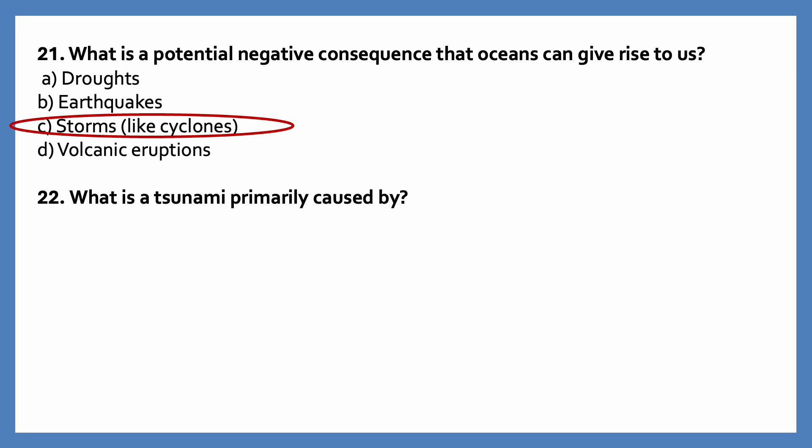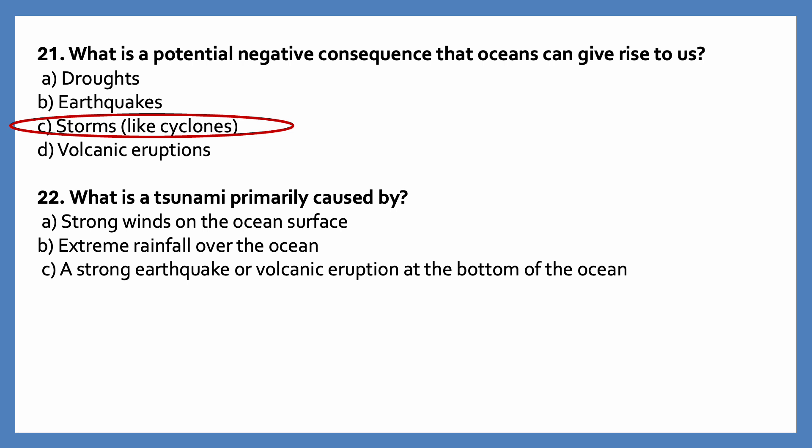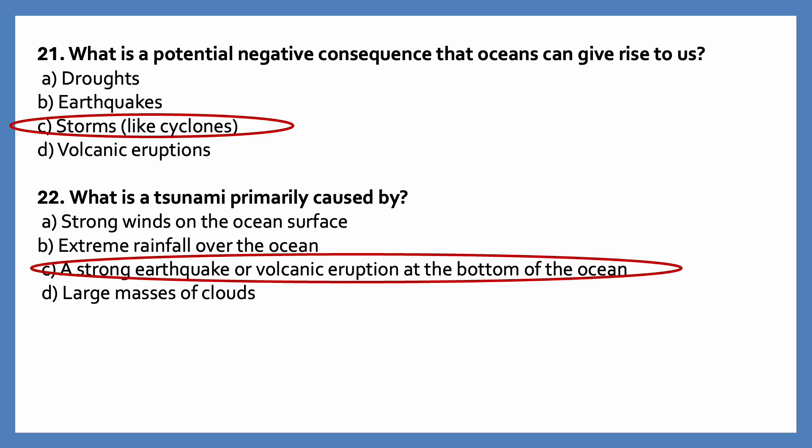What is a tsunami primarily caused by? Options are: strong winds on the ocean surface; extreme rainfall over the ocean; a strong earthquake or volcanic eruption at the bottom of the ocean; large masses of clouds. The correct answer is a strong earthquake or volcanic eruption at the bottom of the ocean — this is the primary cause of a tsunami.